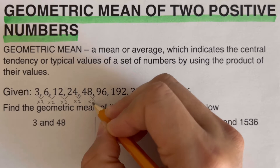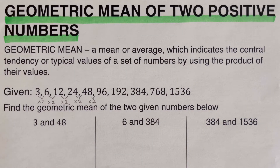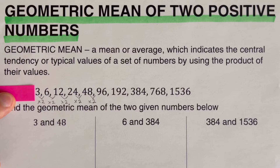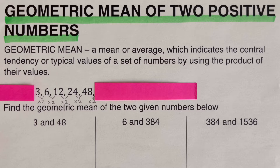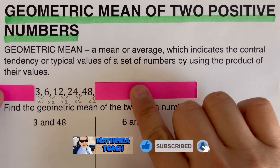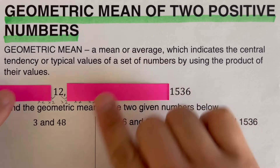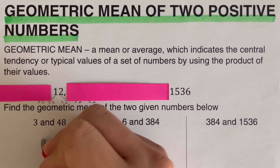So 3 times 2 is 6, 6 times 2 is 12, 12 times 2 is 24, 24 times 2 is 48, and so on. We are asked to determine the geometric mean between 3 and 48. Looking at the geometric sequence, we need to find the middle number between 3 and 48, and that is 12. So the geometric mean of 3 and 48 is 12.